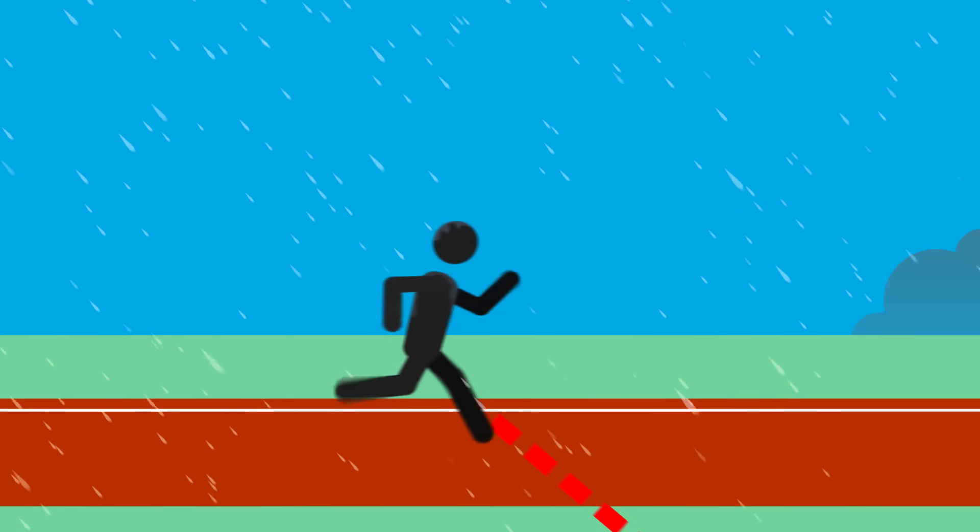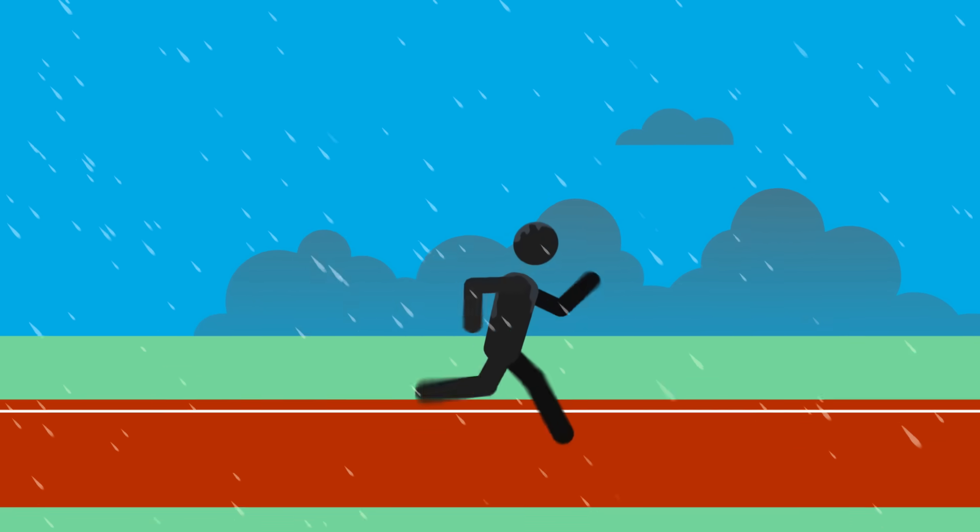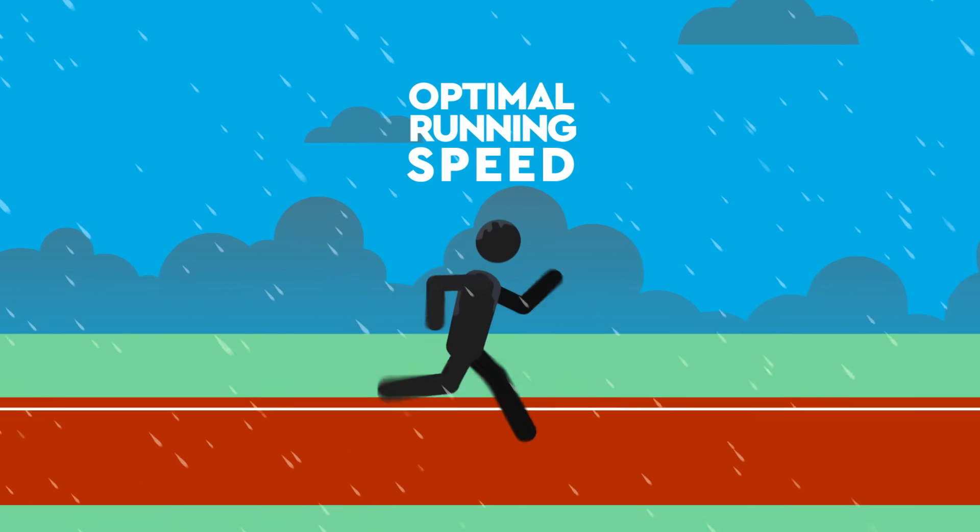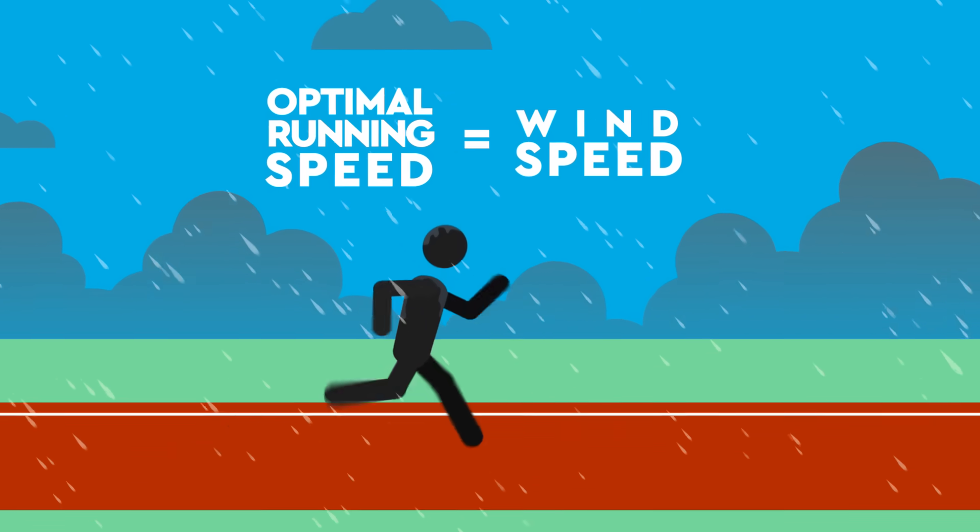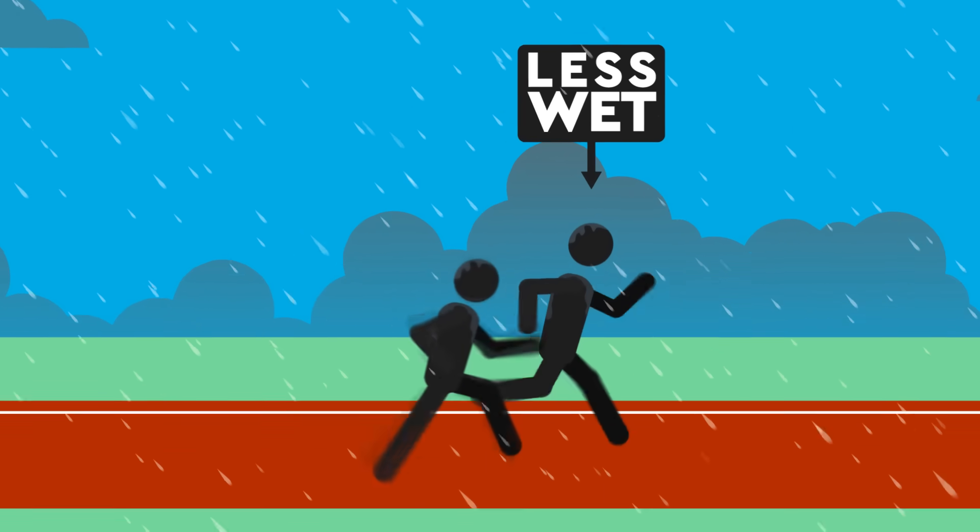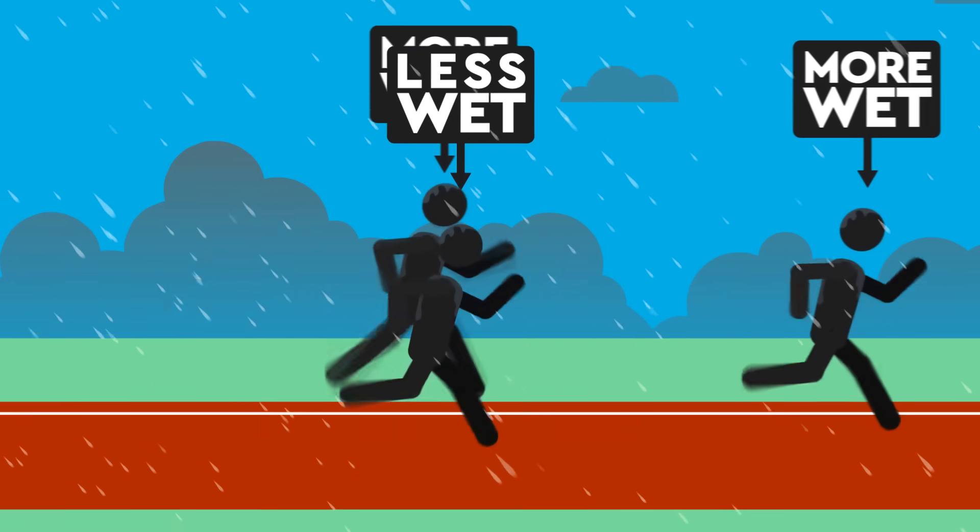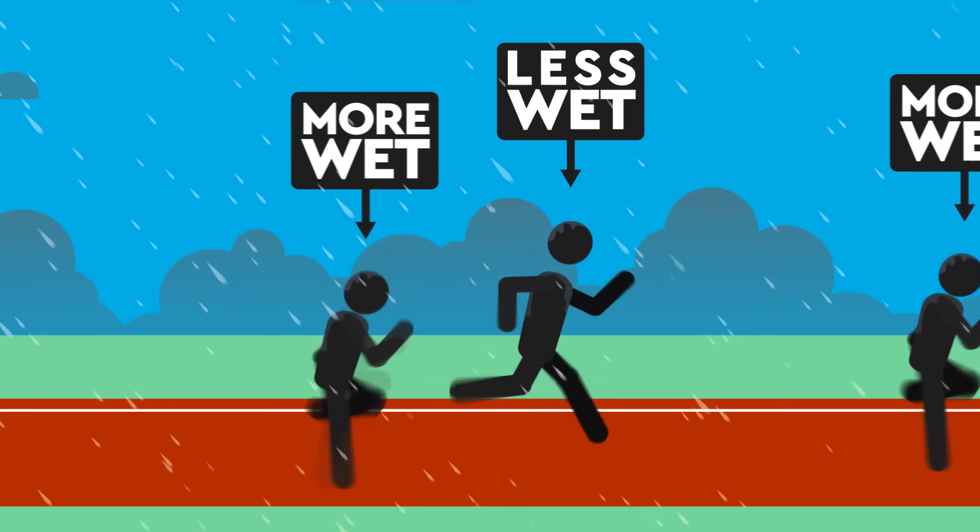However, if the wind is blowing the rain at you from behind, you should still run, but this time there is actually an optimal speed at which you need to move that is equal to that of the wind. Running either slower or faster than this speed reduces how relatively dry you'll be upon arrival compared to walking.